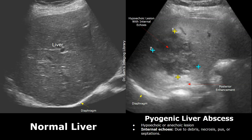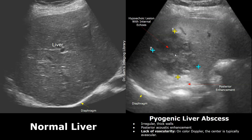Most abscesses appear as hypoechoic or anechoic lesions — dark areas compared to normal liver tissue. They are filled with medium-level internal echoes, which gives them a heterogeneous appearance. The internal echoes are due to debris, necrosis, pus, or septations. The abscess can also have irregular thick walls, and it will always have posterior acoustic enhancement. This bright area behind the abscess is the enhancement.